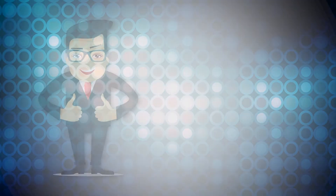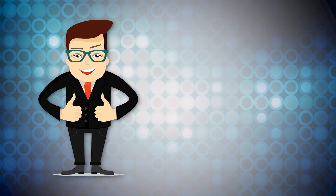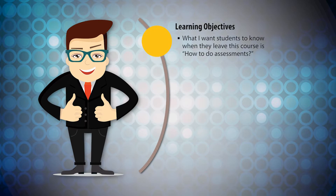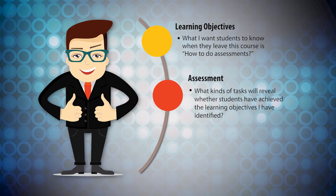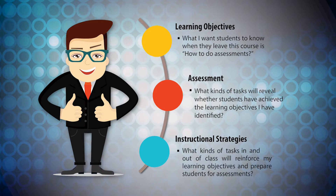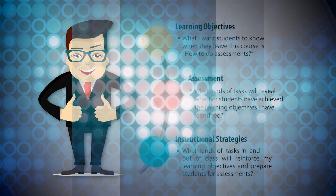To ensure that these three components of your lessons are aligned, teachers should ask themselves the following questions. Firstly, learning objectives: what do I want students to know and be able to do when they leave this course? Secondly, assessments: what kinds of tasks will reveal whether students have achieved the learning objectives I have identified? And thirdly, instructional strategies: what kinds of activities in and out of class will reinforce my learning objectives and prepare students for assessments?